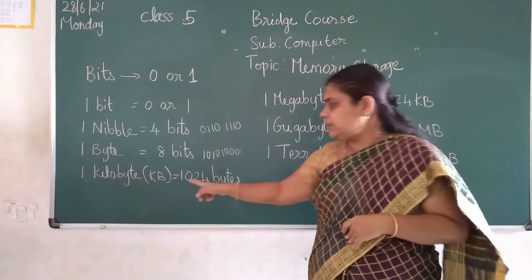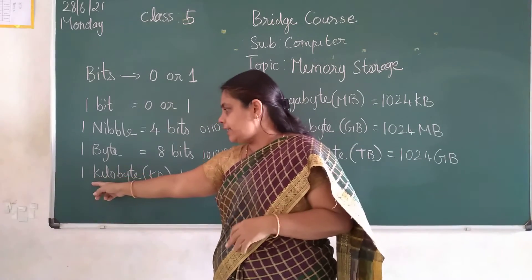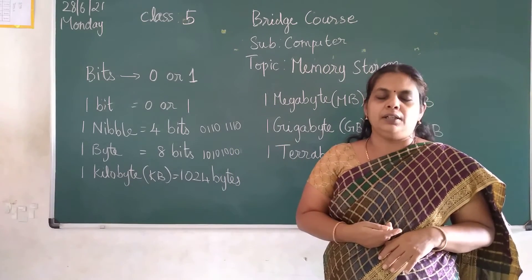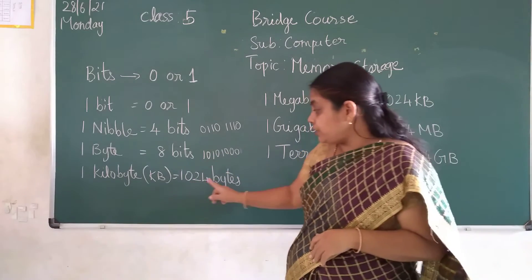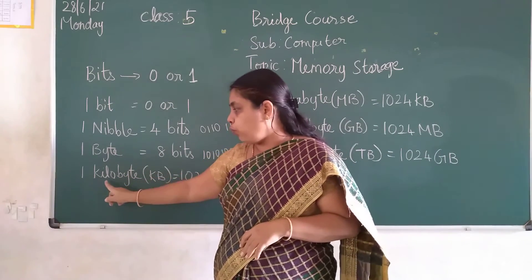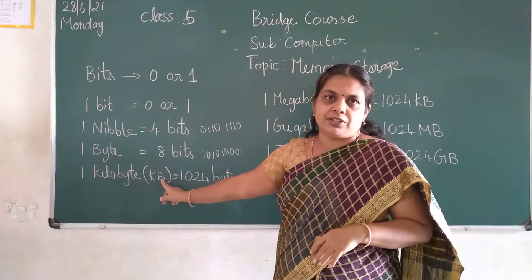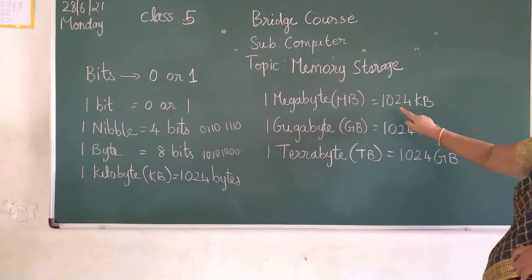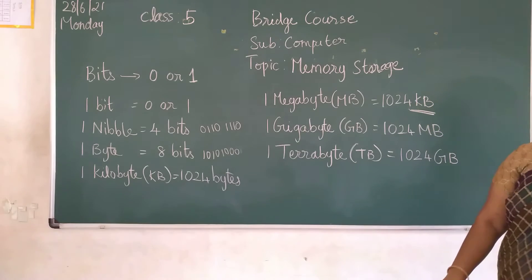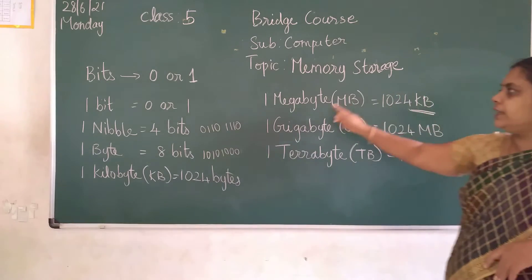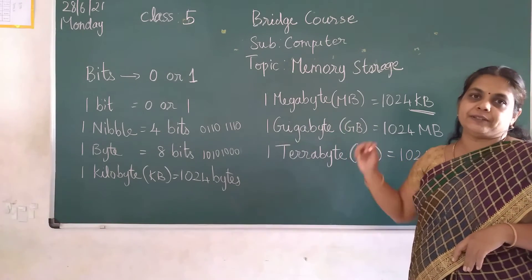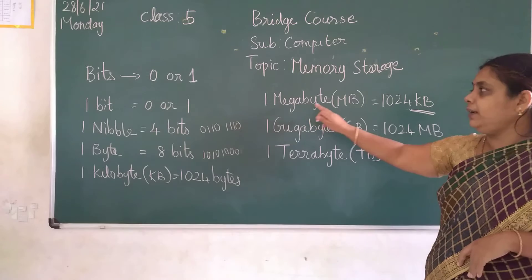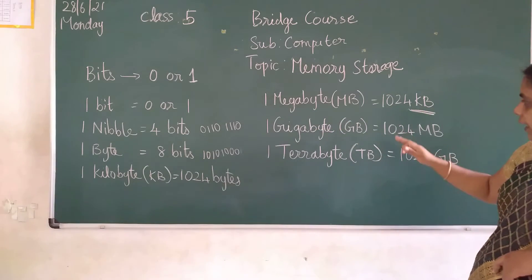1024 bytes is called as 1 kilobyte. We know 1000 grams is 1 kilogram, 1000 meters is 1 kilometer. Like that, 1024 bytes is called as 1 kilobyte. Short form is KB. Then you come over to megabyte. 1024 kilobytes is called as 1 megabyte. 1024 KB is known as 1 megabyte.